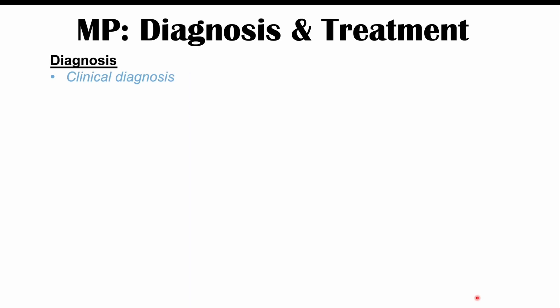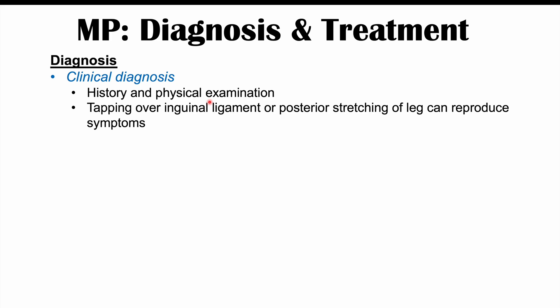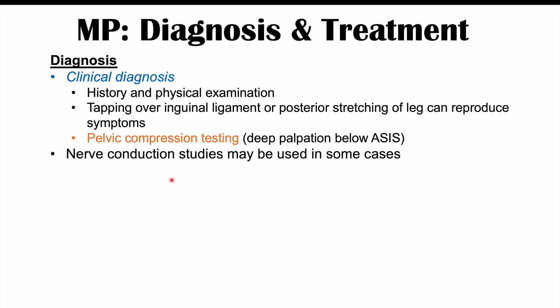The diagnosis is a clinical diagnosis involving history and physical examination, looking for the causes and signs and symptoms discussed. Tapping over the inguinal ligament or posterior stretching of the leg can reproduce symptoms — specifically tapping roughly one centimeter medial to the anterior superior iliac spine. Pelvic compression testing involves deep palpation roughly one centimeter medial to the ASIS; reproduction of symptoms indicates a positive test. Nerve conduction studies may be used if the diagnosis is uncertain. EMG or electromyography is normal, which can help rule out other conditions.